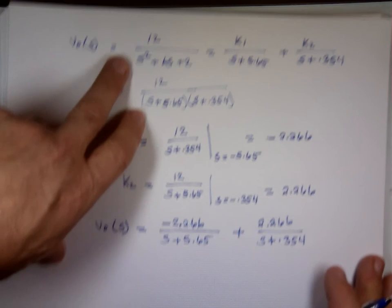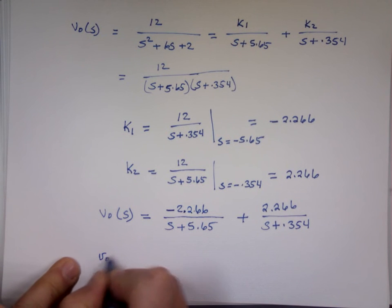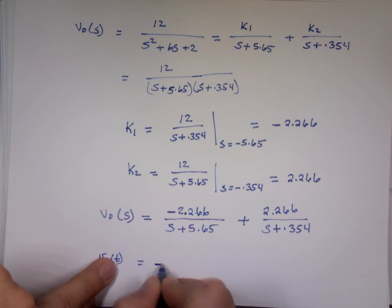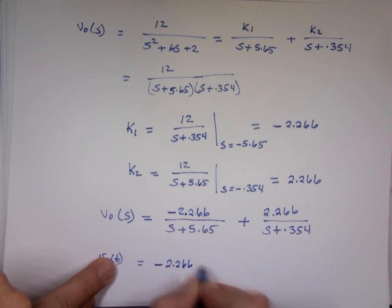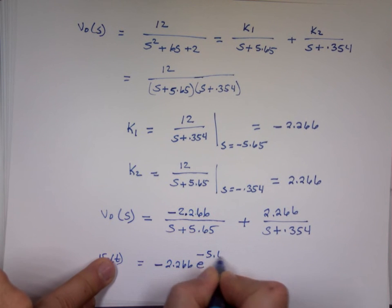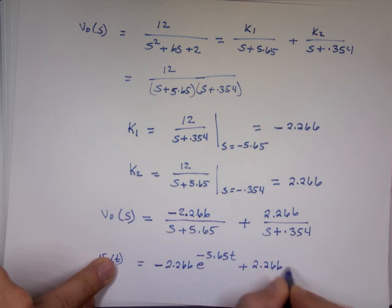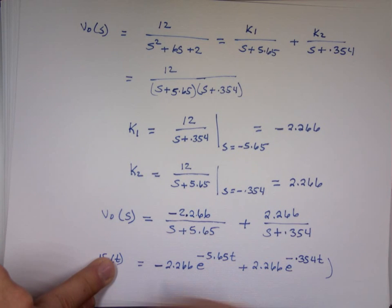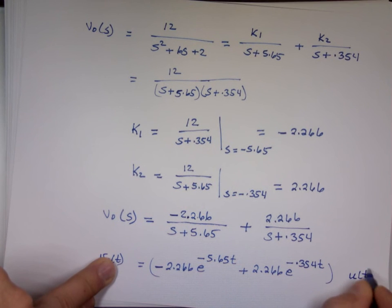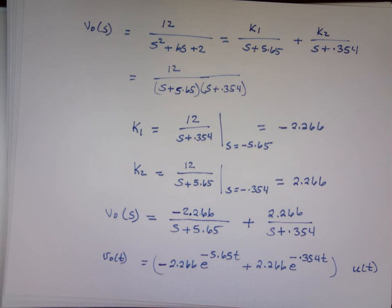So now my solution is changed to a function of time. It's negative 2.266 e to the power of negative 5.65t plus 2.266 e to the power of negative 0.354t. And again, in circuits it's only good for t greater than 0. When you walk into the lab and build that, we always add u(t).